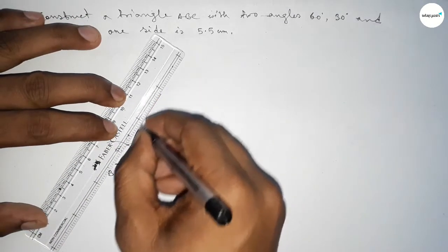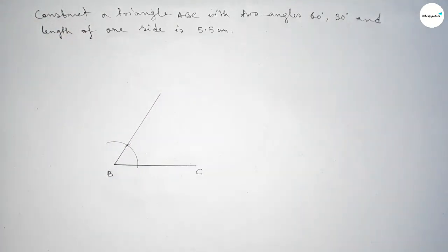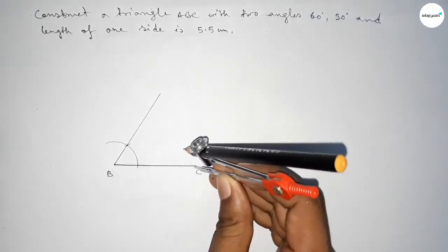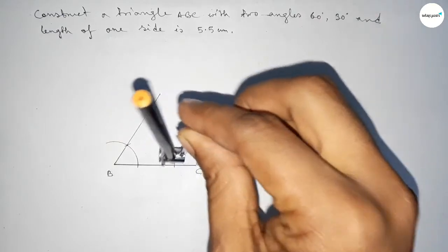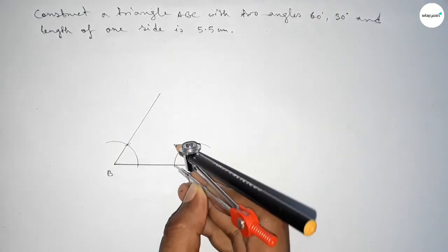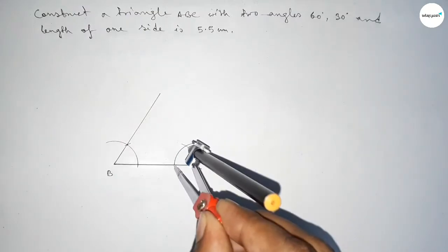Now again drawing here a 30 degree angle on point C. Putting the compass here and drawing arc with same length, and putting the compass here and cut here, and drawing an arc here with same length.